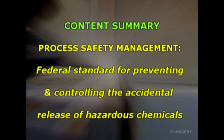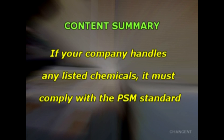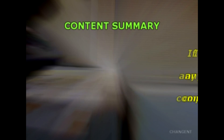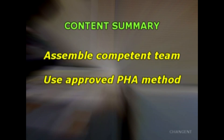Here's a quick summary of what we've covered so far. The Process Safety Management of Highly Hazardous Chemicals is a federally mandated standard for preventing and controlling the accidental release of hazardous chemicals. If your company handles one of the listed chemicals, it must comply. The standard also includes flammable fluids in quantities of 10,000 pounds or greater. Process safety information — including chemical hazards, technology, and equipment — must be established in writing prior to conducting the PHA. A competent team should be assembled to conduct the PHA using one or more approved methods.